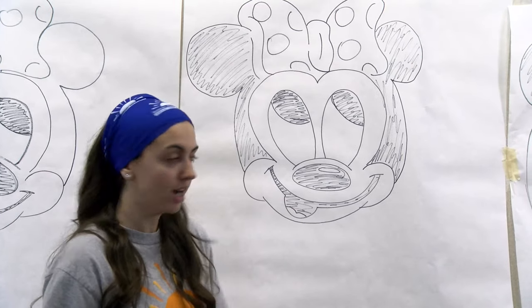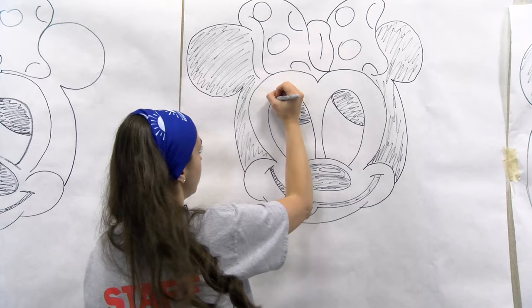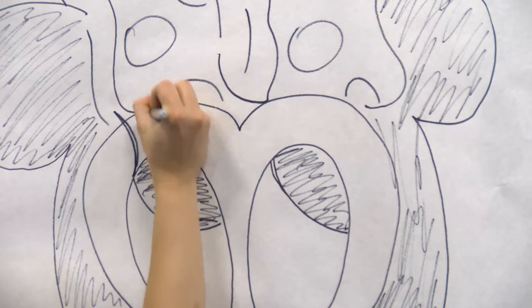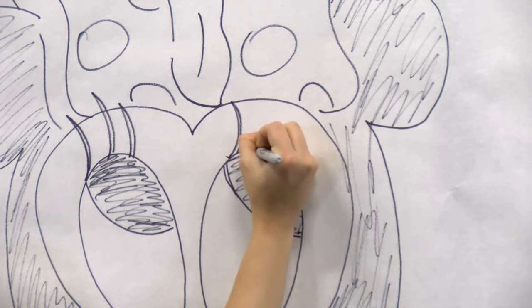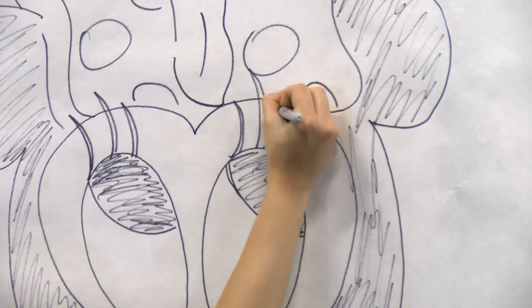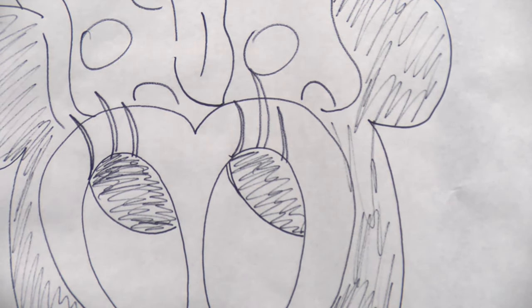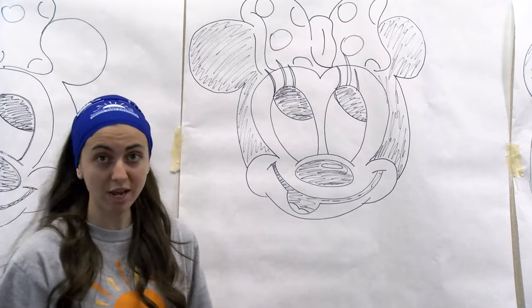Next step, we're going to color her in and we have to add some decorations, right? She needs some eyelashes because she is a girl. I mean, everybody has eyelashes, but she's got really long ones. Okay, so you can color that in and then that's basically it.